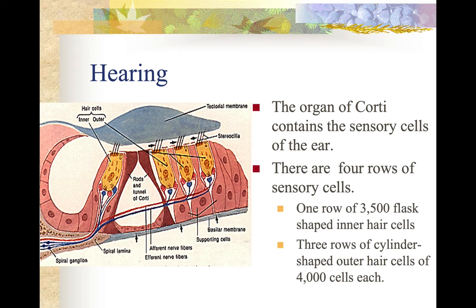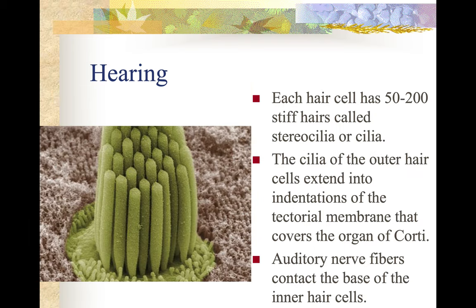The organ of Corti contains the sensory cells of the ear. There are four rows of sensory cells: one row of 3,500 flask-shaped inner hair cells, and three rows of cylinder-shaped outer hair cells of 4,000 cells each. As you go through life, some of these become damaged and non-functional, but you can still hear because there are so many of them and you don't destroy them all, hopefully.